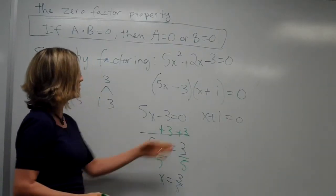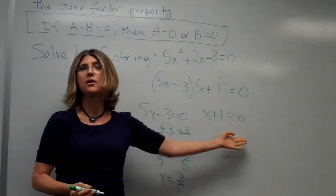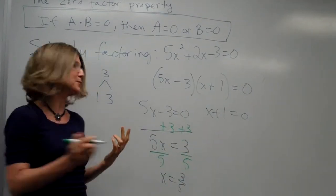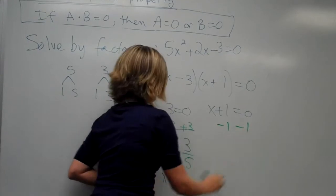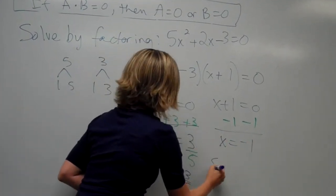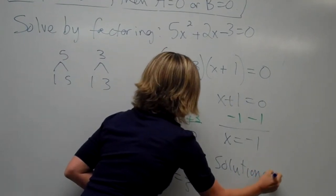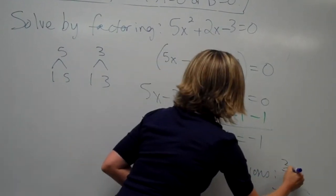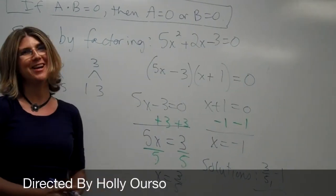Our second solution here we've found, since we have x plus 1 is 0, we undo adding 1, so we subtract 1. Of course, in math, we do that from both sides, which gives us x is equal to minus 1. So our solutions are 3 fifths and minus 1. Did you get those? Good job, class.